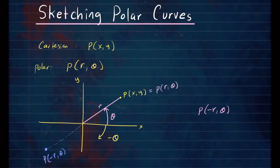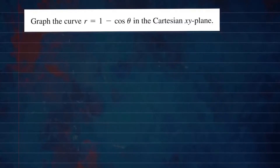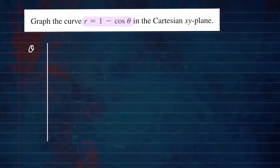All of that should be a quick review before we get into polar curves. So let's go ahead and do this — we're going to graph r equals 1 minus cosine theta. We're going to make a table of values so that it's easier to sketch. We're going to make a column for theta and based on our choice for theta, we can find r, because r is in terms of theta.